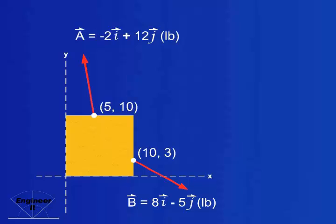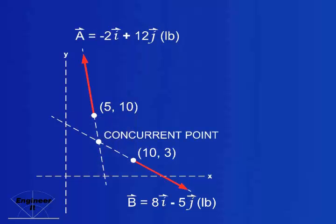Now that you've seen this visually, let's look at a way to calculate where the concurrent point of these two vectors, A and B, is in space. This concurrent point has an x and y position relative to our coordinate system.